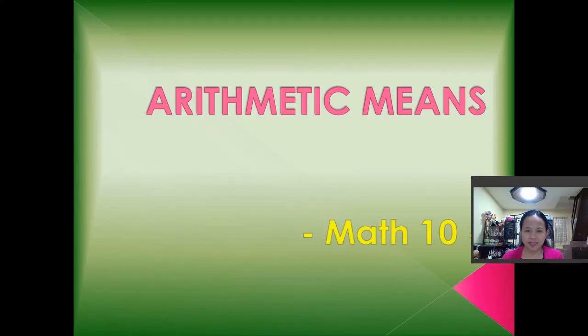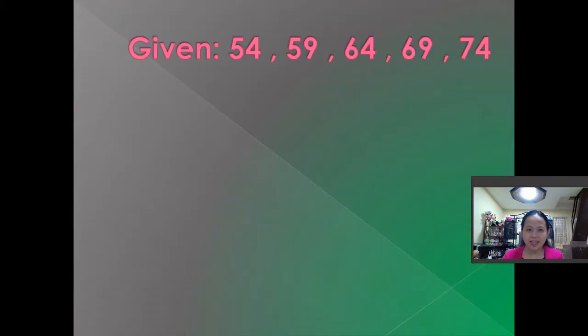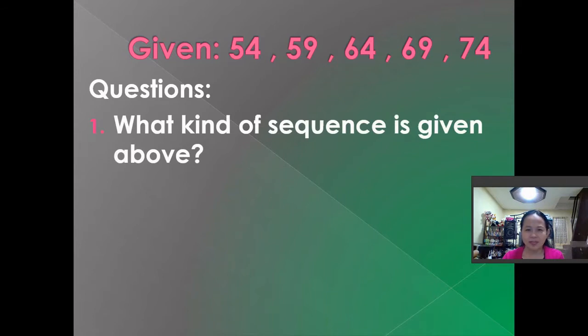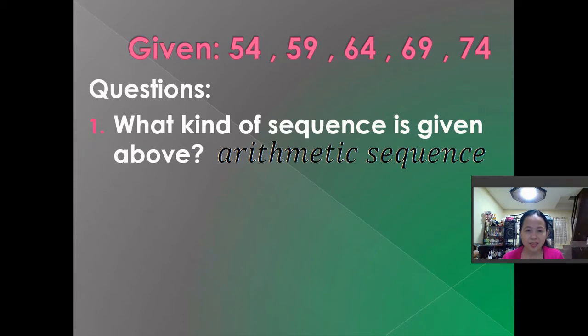Arithmetic means — another lesson for MATH 10. We have the given terms 54, 59, 64, 69, and 74. What kind of sequence is illustrated by these terms? That is an arithmetic sequence.